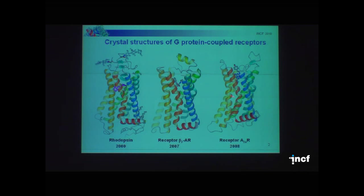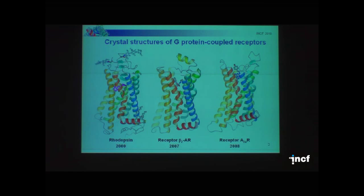As you see, the transmembrane part of these receptors is nearly the same. They consist of seven transmembrane domains, colored from blue for helix one to red for helix seven, and there is a small helix eight parallel to the membrane. In some cases there are palmitoyl chains, which are the anchor of this protein in the membrane.